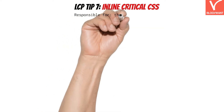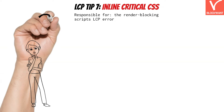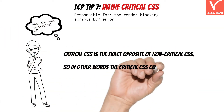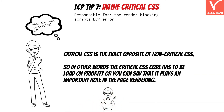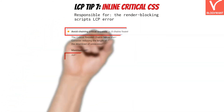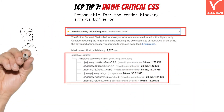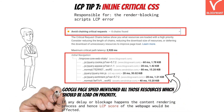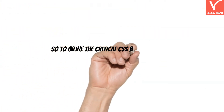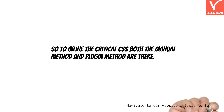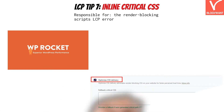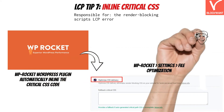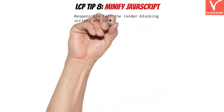LCP Tip 7: Inline Critical CSS. Critical CSS is the exact opposite of non-critical CSS — it must be loaded on priority as it plays an important role in page rendering. If you find any CSS under the 'Avoid Chaining Critical Requests' Google PageSpeed error, you should inline the CSS of your web page, as any delay or blockage affects the content rendering process and hence the LCP score. To inline critical CSS, both manual and plugin methods are available. With WP Rocket, the process is the same as the defer technique — just enable the Optimize CSS Delivery option.